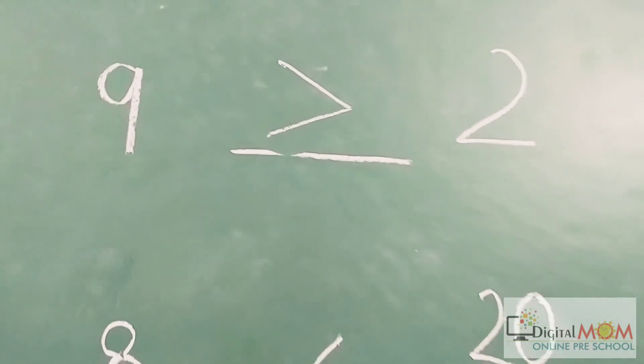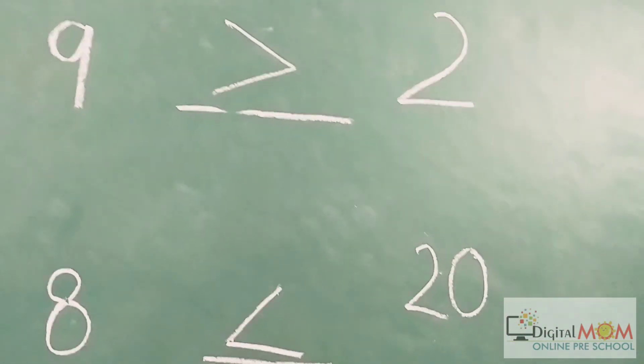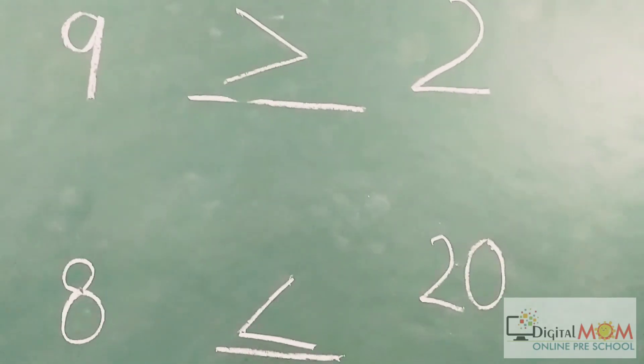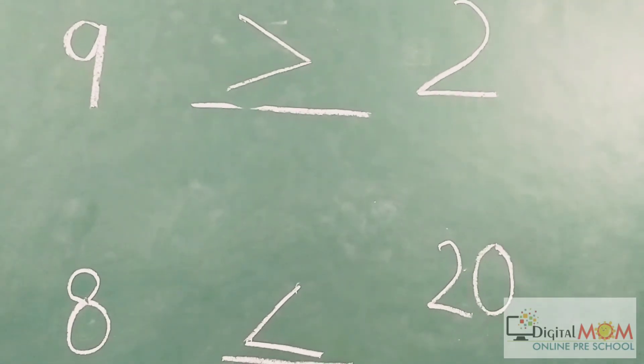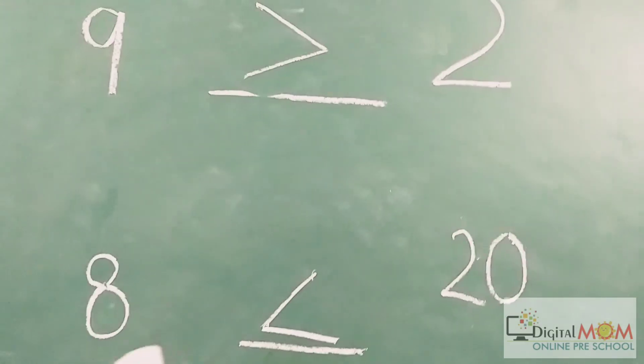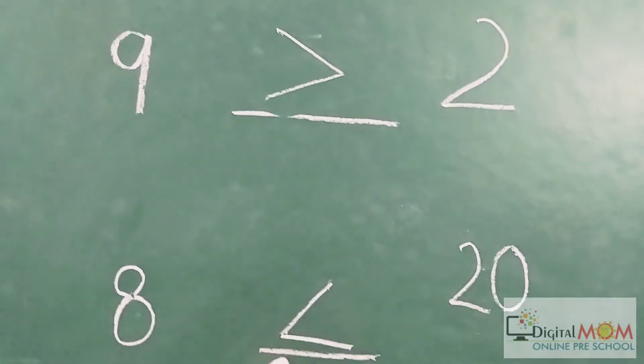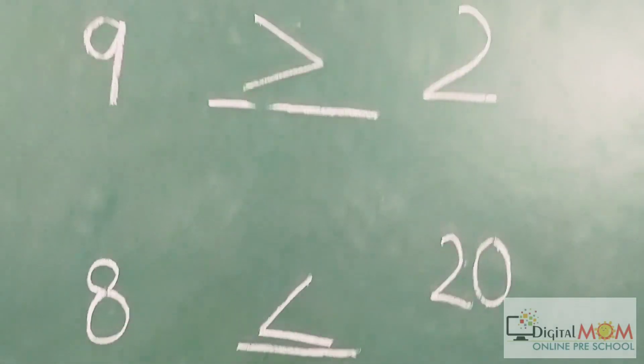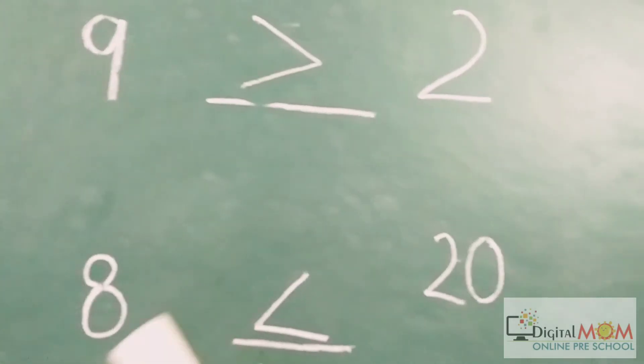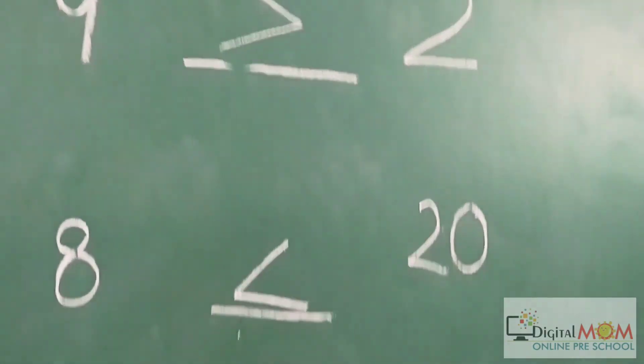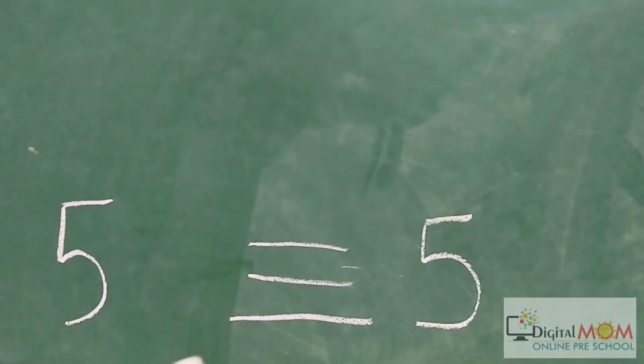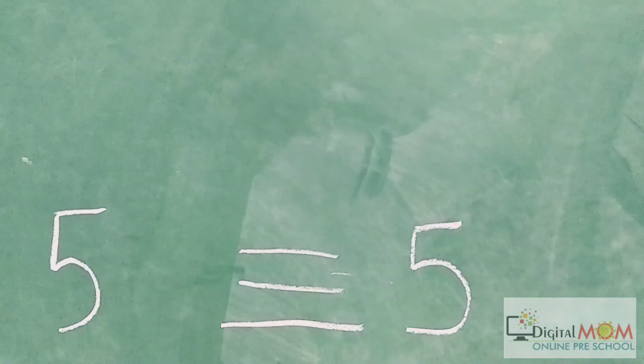Kids, there is a simple trick. You will never get confused in greater than and less than. Whatever the question, whether you have to see greater or less than, remember: you have to just compare the number and keep the alligator's mouth open towards the greater number. The answer will be perfectly correct. And when both sides are the same in number, you will put the equal to sign.